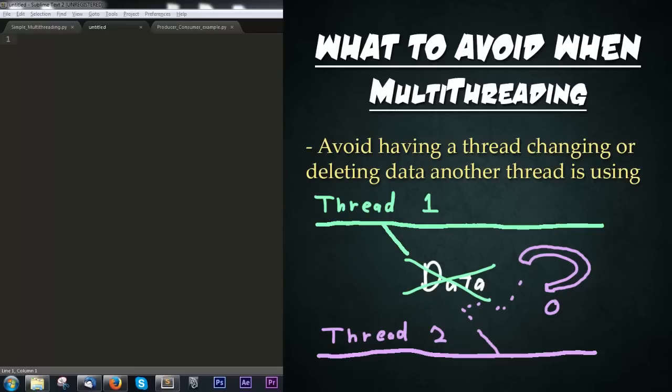So what should we avoid when multithreading? Typically you don't want to use multithreading in instances where two threads are going to be manipulating or changing the same data. Accessing the same data is fine, but changing it could go wrong. Imagine one thread deletes some data or variable that exists somewhere else in the program — then when another thread tries to access it, the whole program crashes. Another instance is when one thread changes a variable type from an int to a string, that could cause problems too. This is a problem that's pretty unique to Python. So basically, segregate your processes.